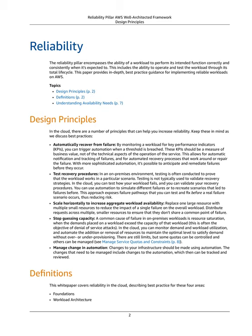Scale horizontally to increase aggregate workload availability: replace one large resource with multiple small resources to reduce the impact of a single failure on the overall workload. Distribute requests across multiple smaller resources to ensure that they don't share a common point of failure. Stop guessing capacity: A common cause of failure in on-premises workloads is resource saturation. When the demands placed on a workload exceed the capacity of that workload, this is often the objective of denial of service attacks.